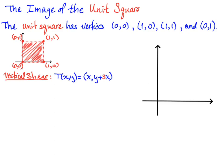Let's look at the image of the unit square under this vertical shear. We find the images of the four vertices and then connect them. The two vertices on the y-axis — (0,0) and (0,1) — have horizontal component 0, so the vertical shift is 3 times 0, meaning nothing. So (0,0) and (0,1) are both fixed points.